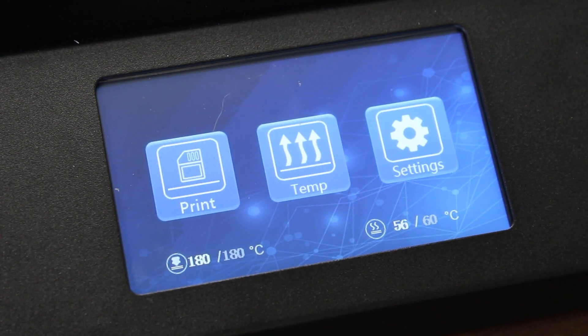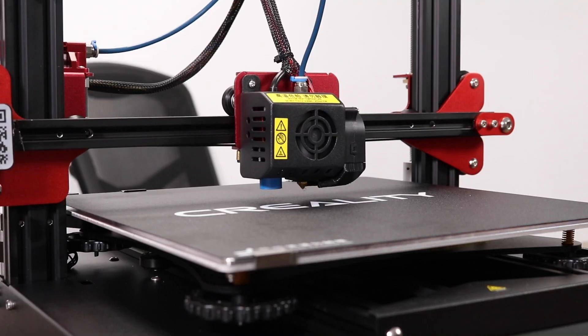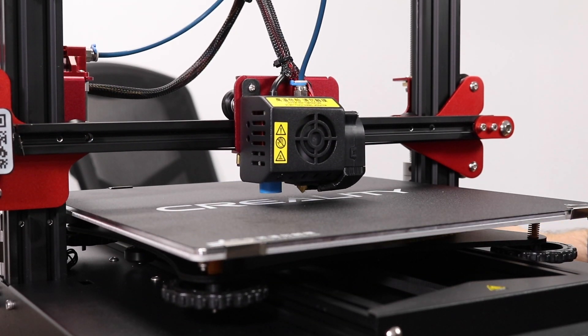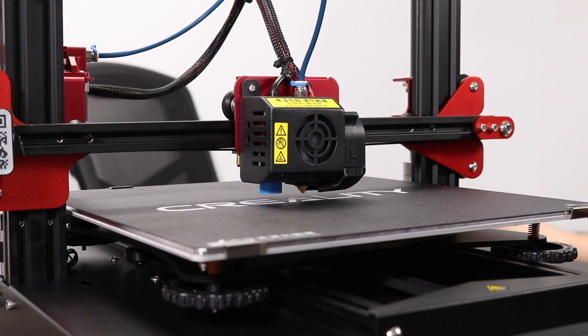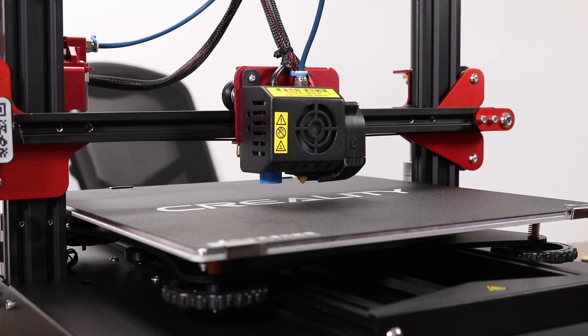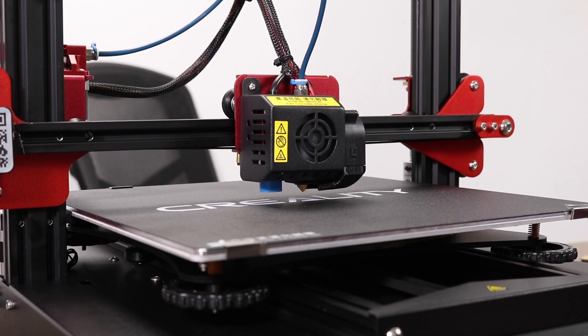Once things have heated up, it's time to set the Z offset. Go to Settings, and then go to Leveling. You should see the printer home itself. Once homing is complete, in the Leveling menu, click Z Home. You will see the printer sense the bed a few times, and then it will finally settle in and stop moving.